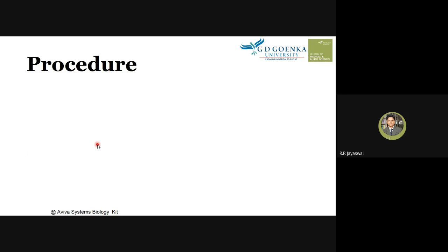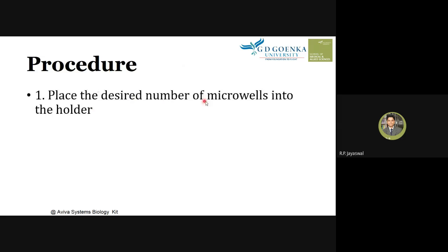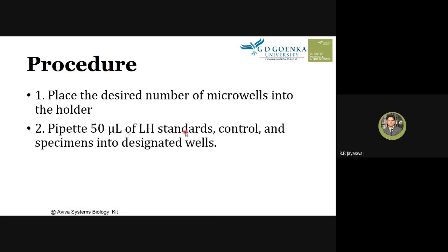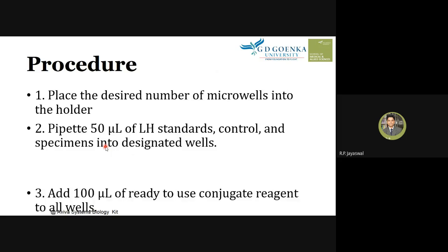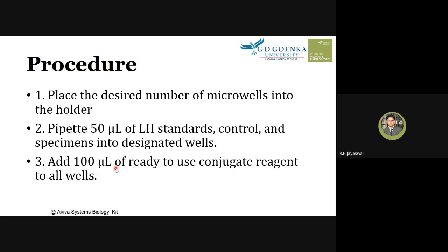Procedure: First, place the desired number of micro-wells in the holder. Pipette 50 µL of each standard, control, and specimen into designated wells. Then add 100 µL of the ready-to-use conjugate reagent (enzyme-labeled antibody) to all wells.